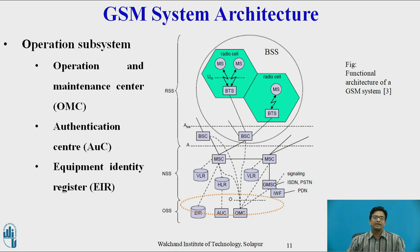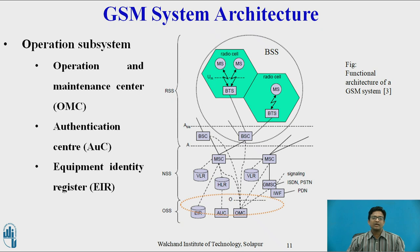EIR, the Equipment Identity Register, is a database for all IMEI numbers. It contains three types of lists: black list, gray list, and white list. Black list IMEI numbers are those of stolen devices. Gray list consists of IMEI numbers used for malfunctioning devices. White list IMEI numbers are valid IMEI numbers. Through these three lists in the EIR, we can identify valid IMEI numbers.